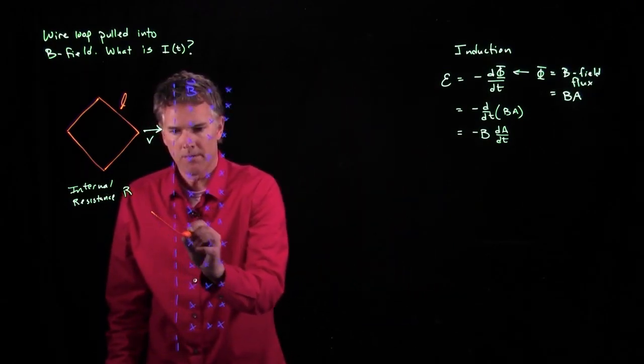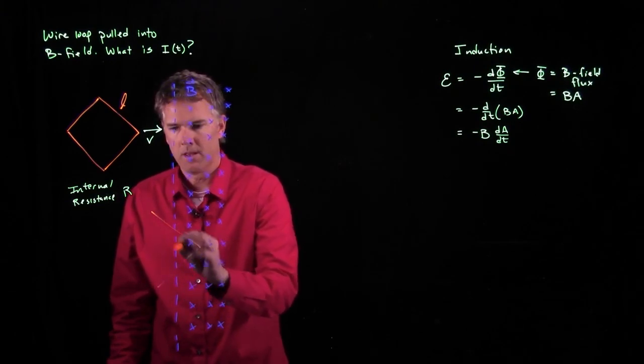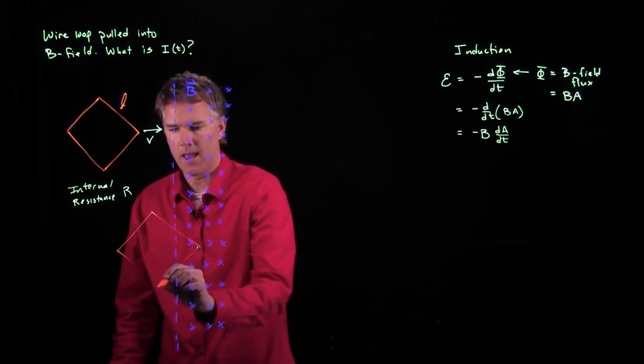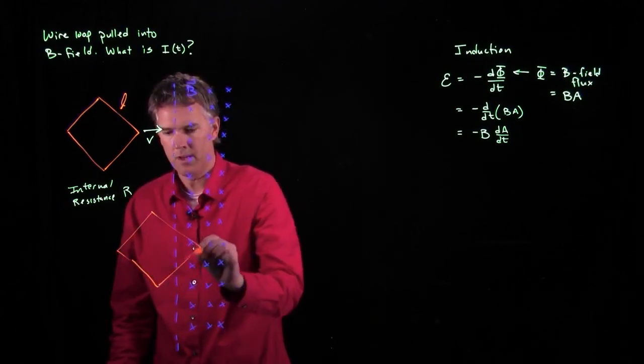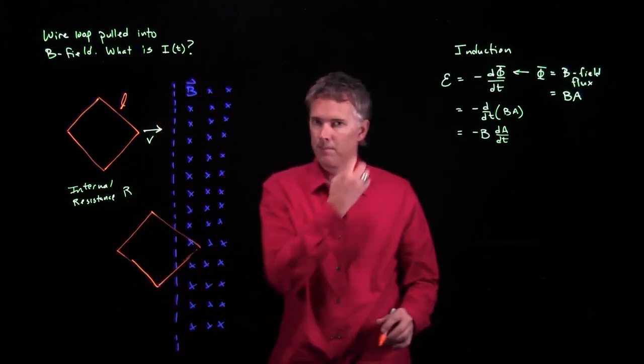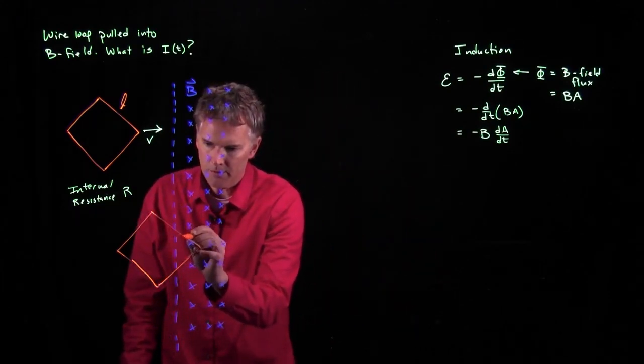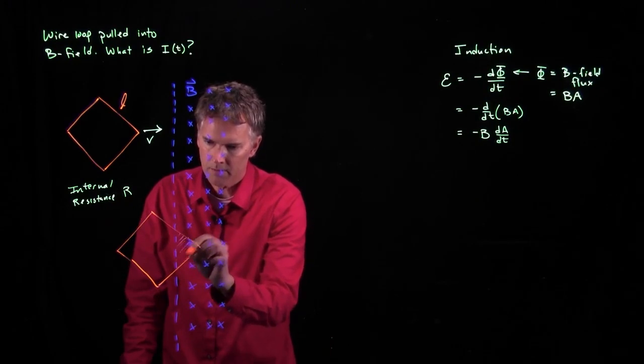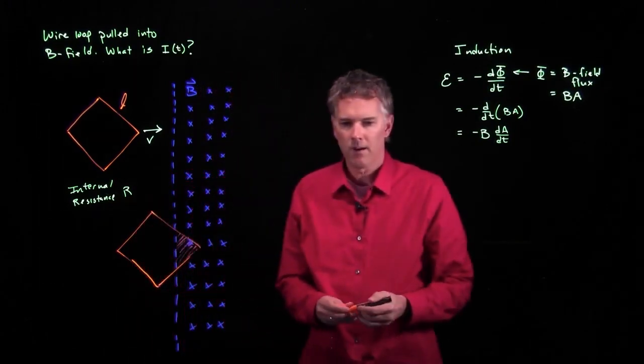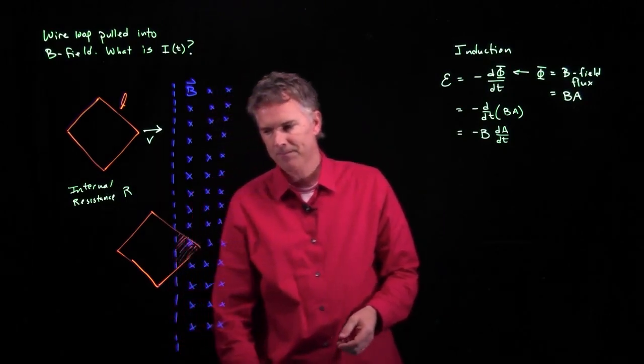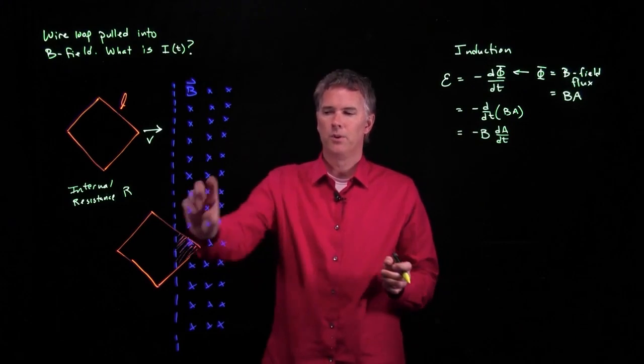So right here it starts to cross, and then at a later time it's further in, and so forth. So if we can identify the key area, which is this area right there, then maybe we can figure out how that area is changing in time. How do we do that? How do we figure out what that area is?